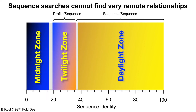Profiles are like protein families — you represent not just a single sequence but a family of sequences, and you turn these families into profiles and align them against sequences. If you want to go into the midnight zone, which is below 20% sequence identity, you actually require profiles on both sides.